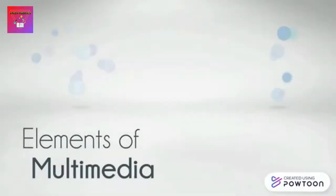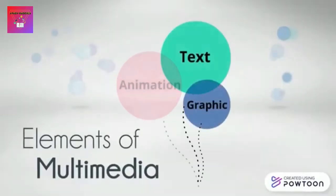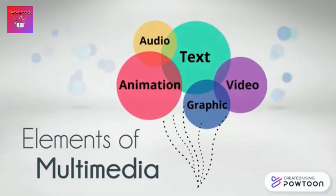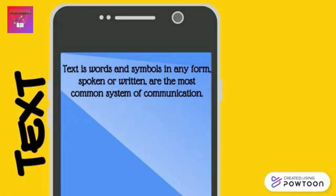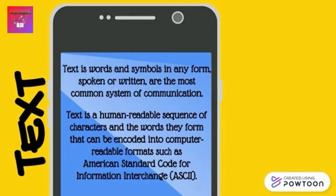Now let's learn about elements of Multimedia. Text — words and symbols in any form, spoken or written — are the most common system of communication. Text is a human-readable sequence of characters and the words they form, that can be encoded into computer-readable formats such as American Standard Code for Information Interchange.